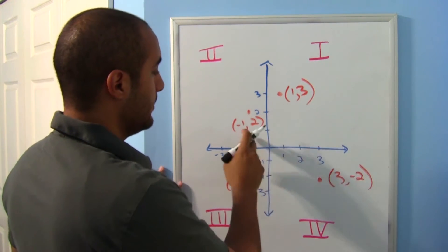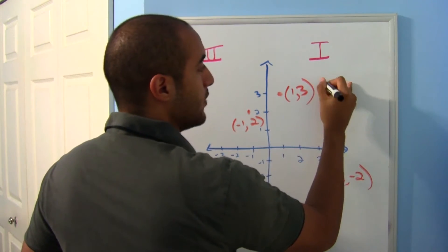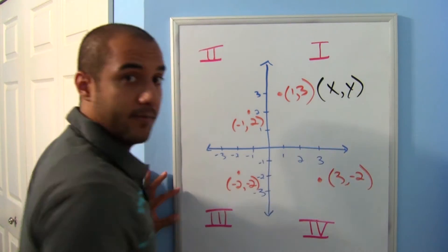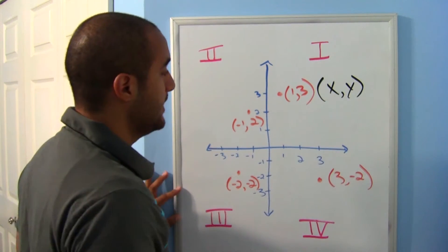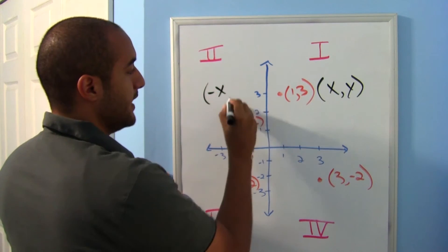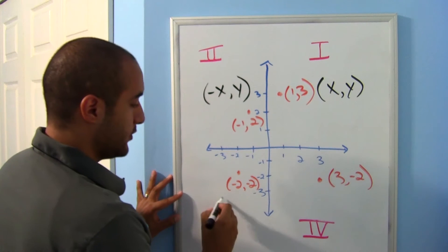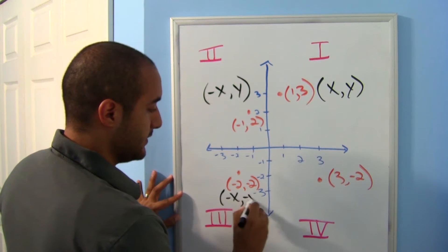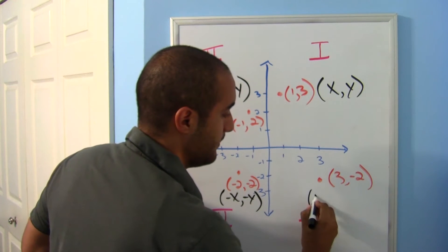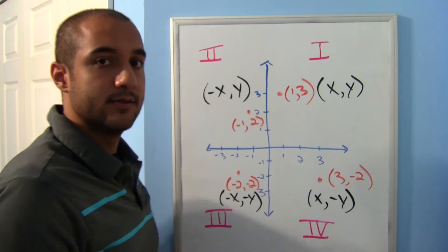In general, any point in the first quadrant has a positive x and a positive y. Any point in the second quadrant has a negative x but a positive y. Any point in the third quadrant has a negative x and a negative y. Any point in the fourth quadrant has a positive x with a negative y.